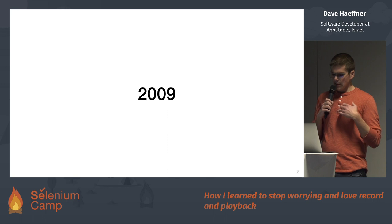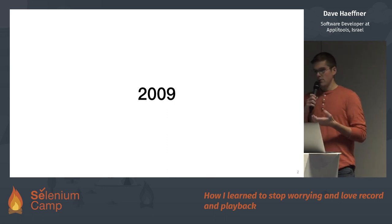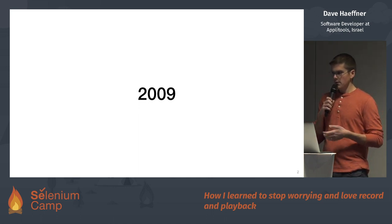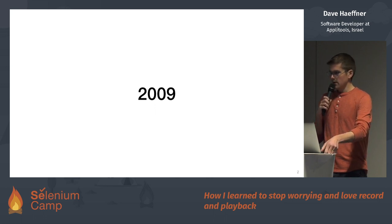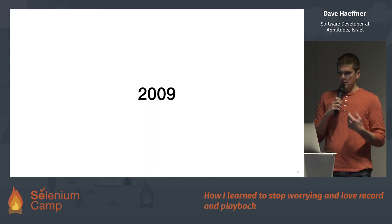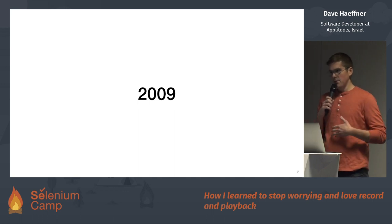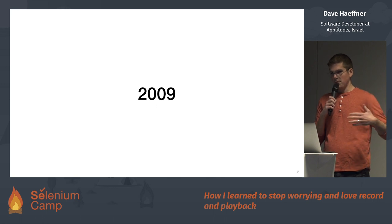Something else happened in 2009. I was fortunate enough to go to a conference in Chicago, the annual Agile conference. There were two people there who I got to spend some time with. One of them was Adam Goucher, who was the maintainer of Selenium IDE at that time. And the other person was Jason Huggins, the creator of Selenium. Less than maybe 200 meters from where this conference was, was where the ThoughtWorks office was, which is where Selenium was created.